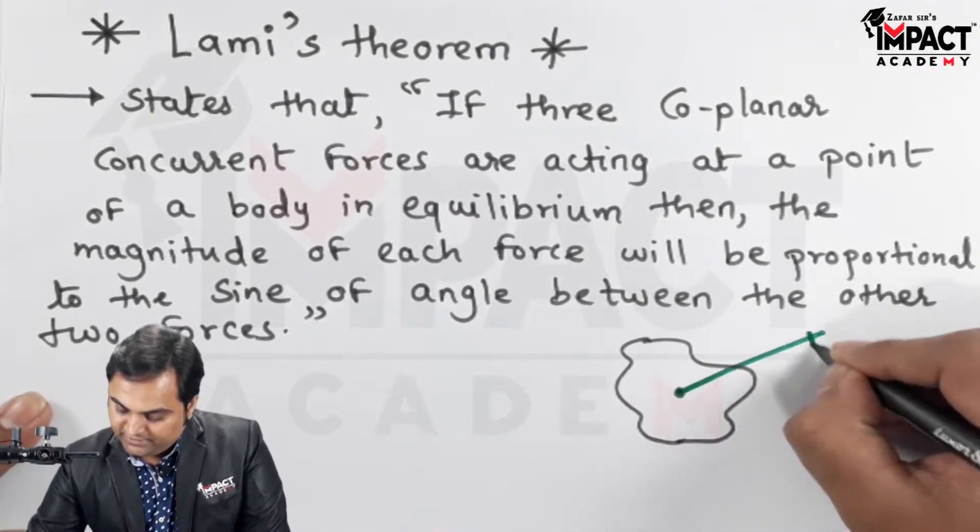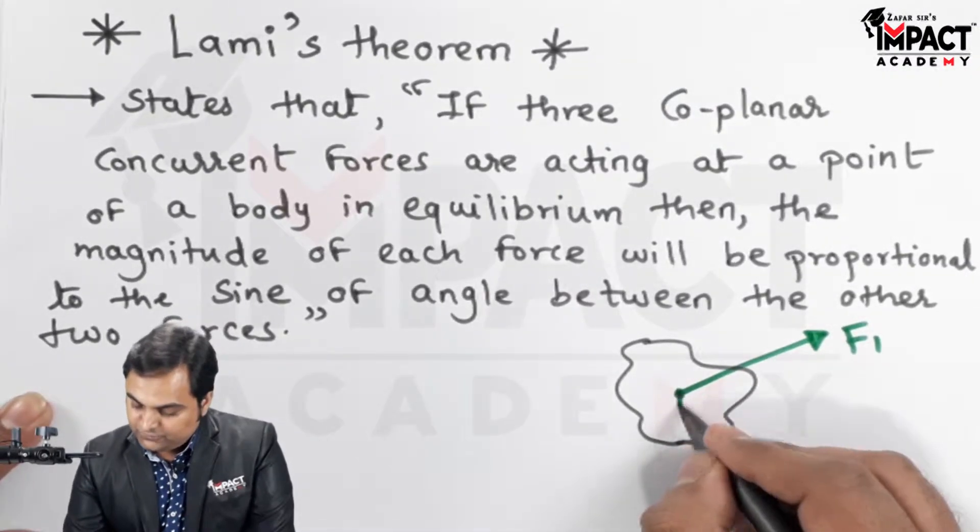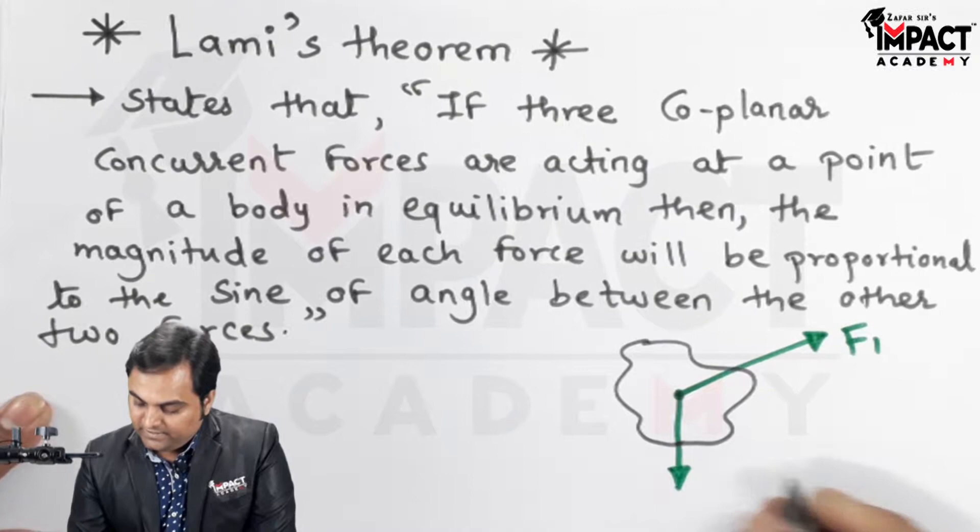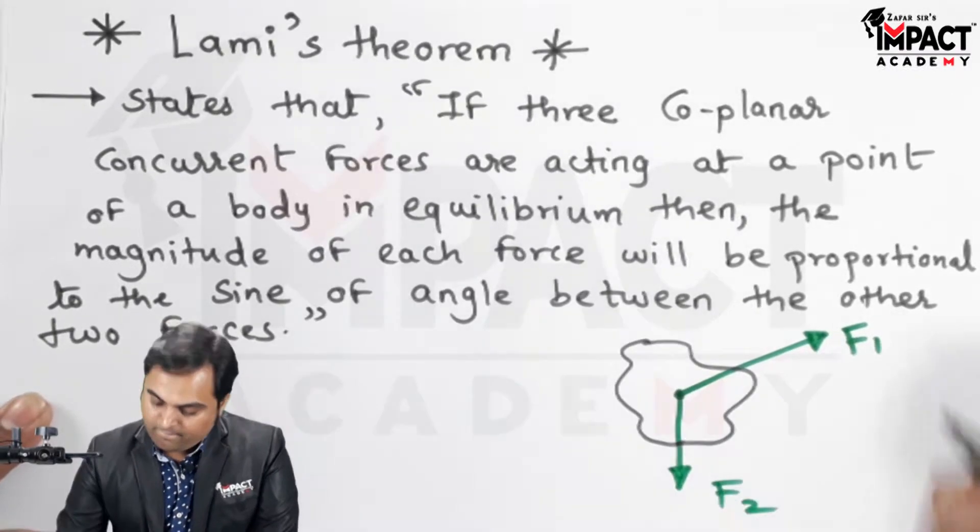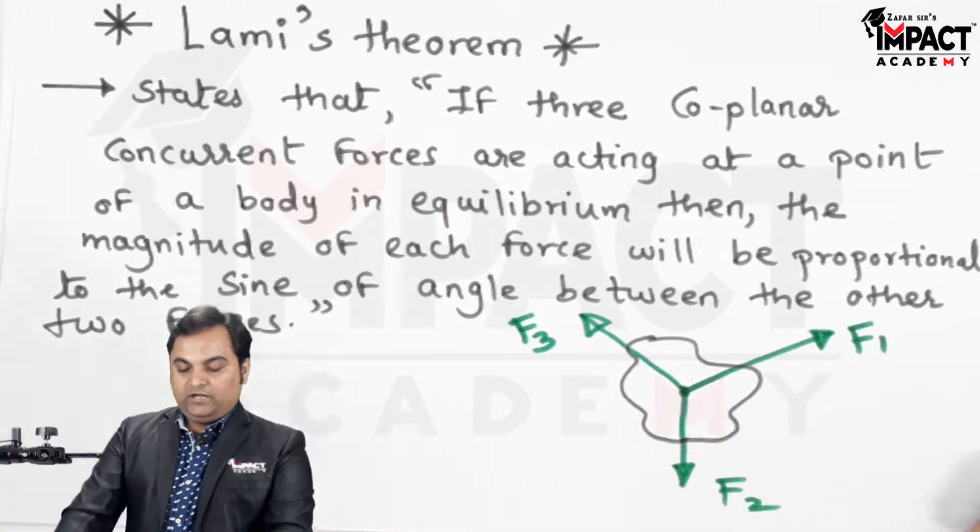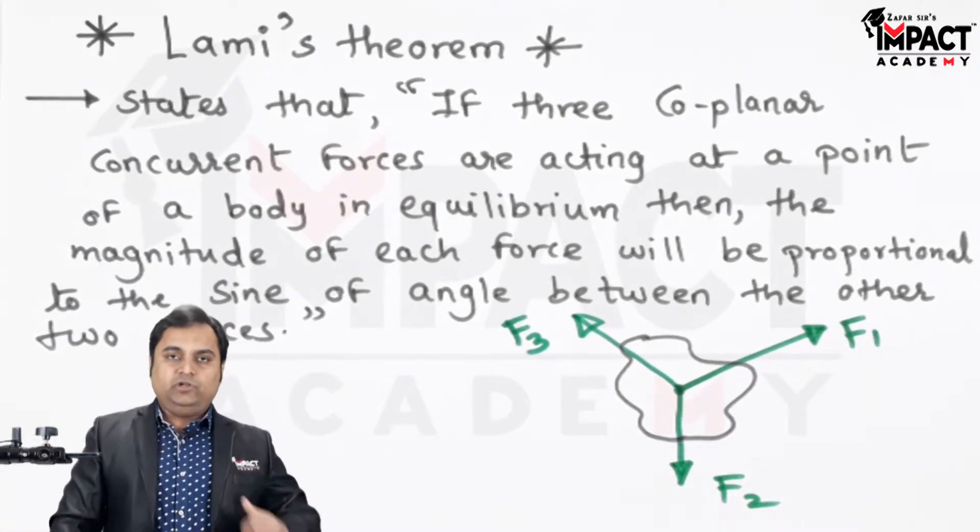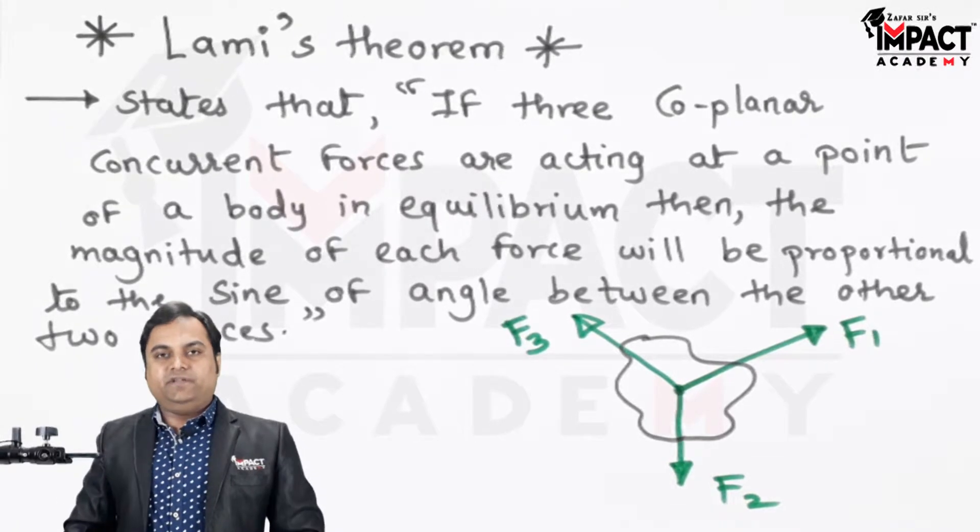If three forces are acting at a point, concurrent forces on this body as can be shown here. Since all are pull type of forces, they have to be treated as positive. If they would have been push type, we would have taken them as negative.